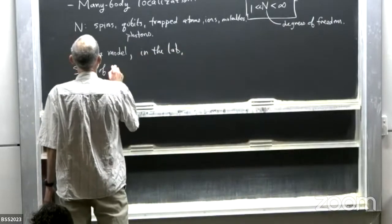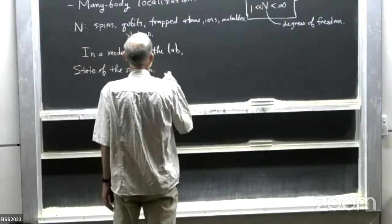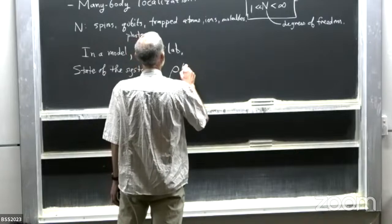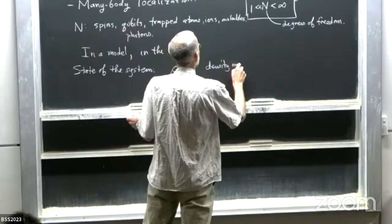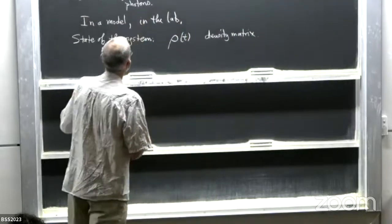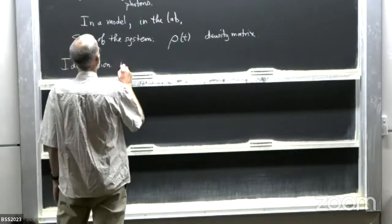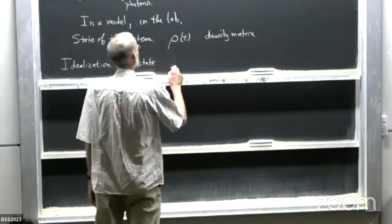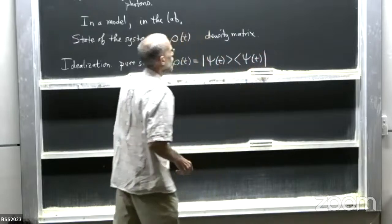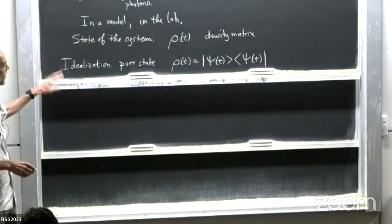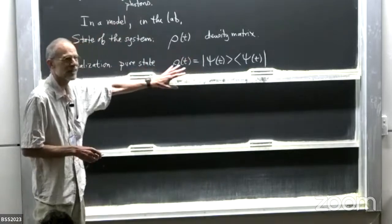The state of the system — at least what we call the quantum state — is a density matrix ρ, which in general depends on time since we're talking about dynamics. There is an idealization which is a pure state: ρ(t) = |ψ(t)⟩⟨ψ(t)|. This is theoretically and conceptually helpful, and it's something one strives for in the lab, but you never get there.